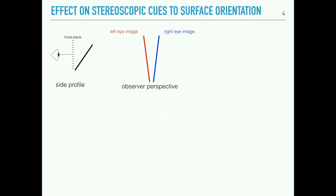So far I've just been showing that pincushion distortions cause curvature in the two-dimensional image. But for 3D stereoscopic displays, we have both left and right eye images to account for. Consider a line placed ahead of your focal plane and slanted top away: the left and right eye images show an increasing horizontal disparity as we move up the vertical axis, and this disparity is approximately linear.